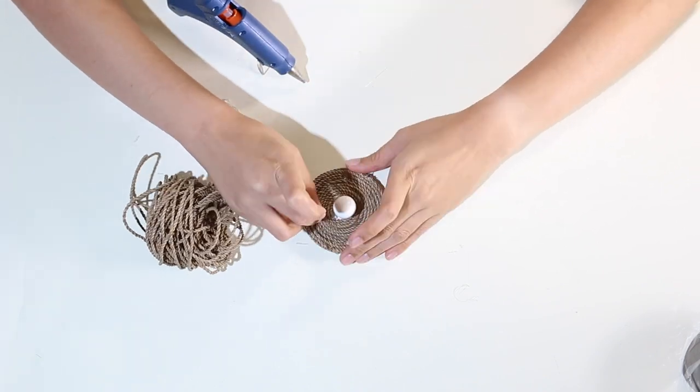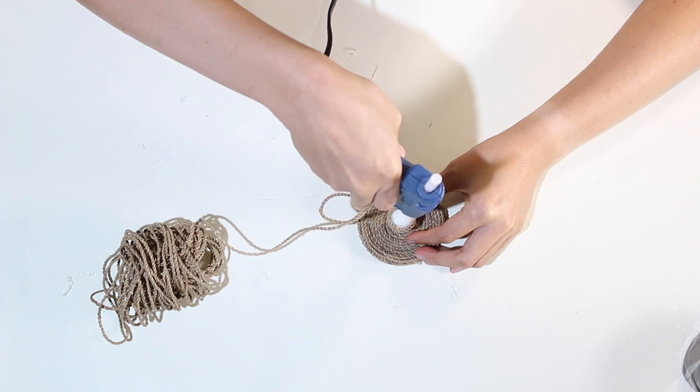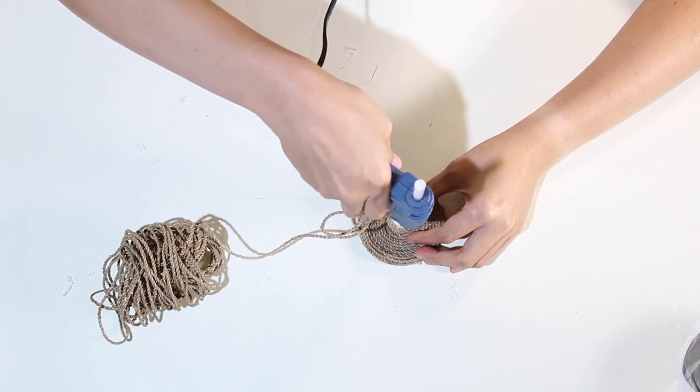When the rope is about reaching the centre, glue and place the doorknob before coiling the remainder of the rope until everything is fully covered.